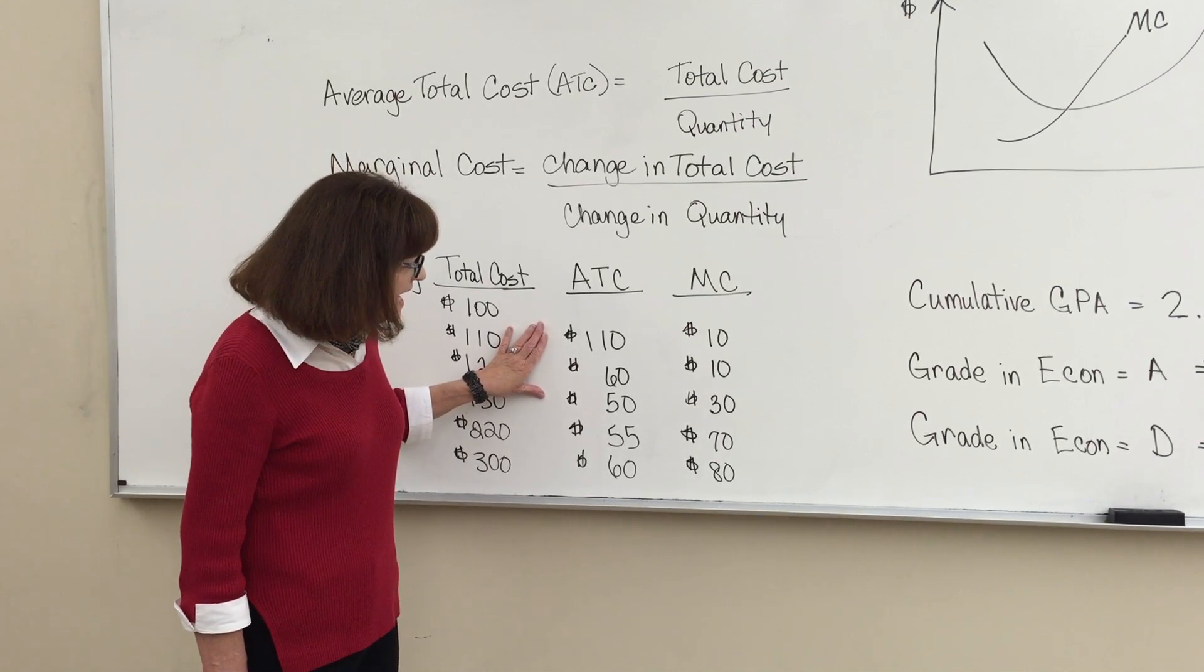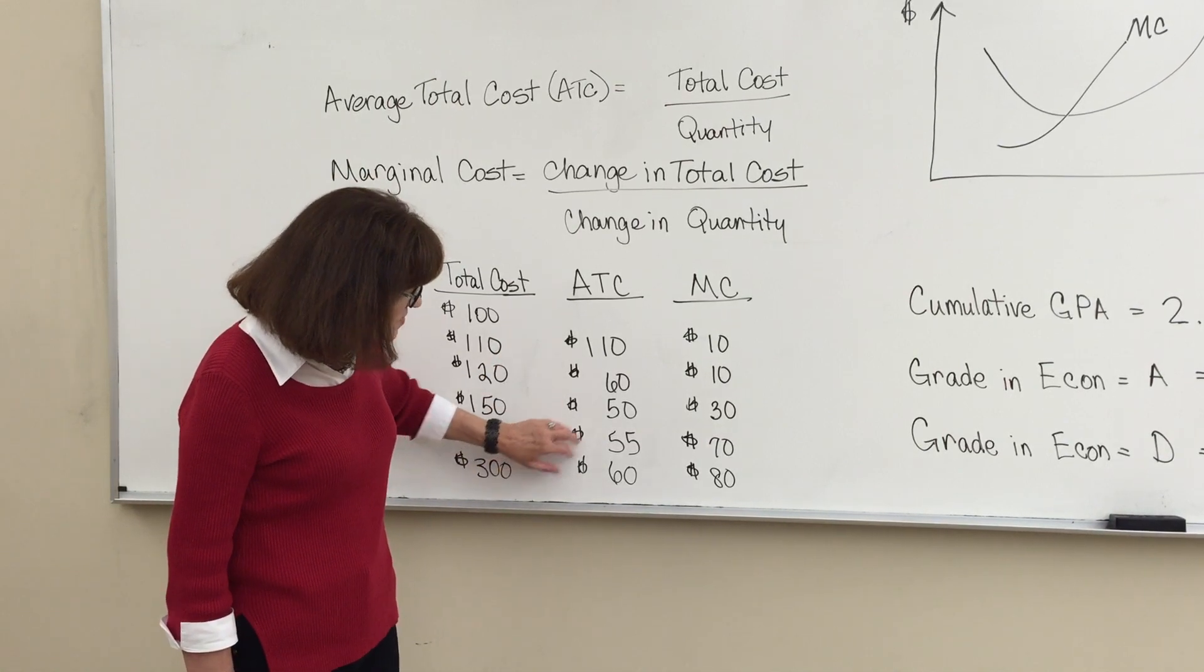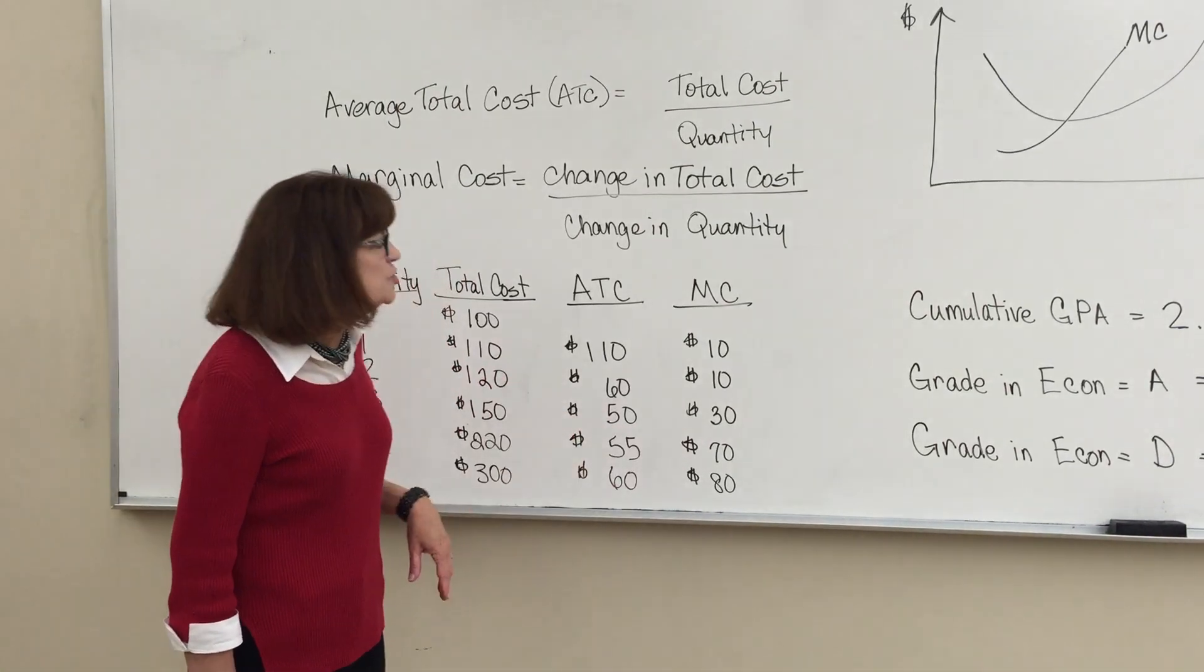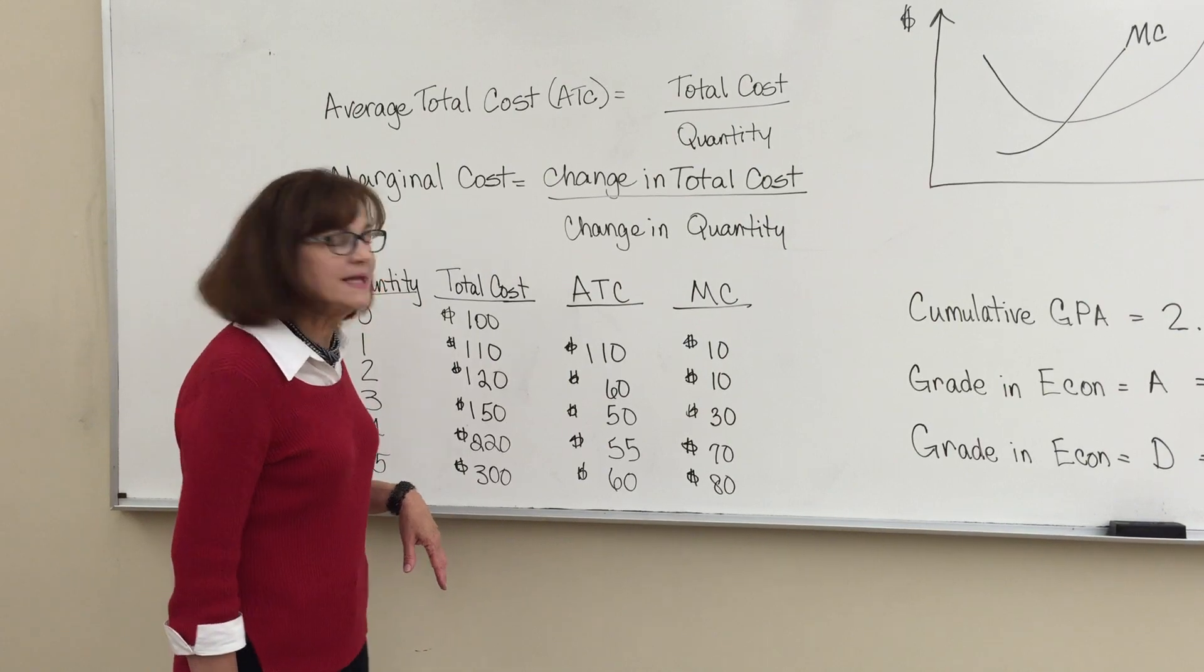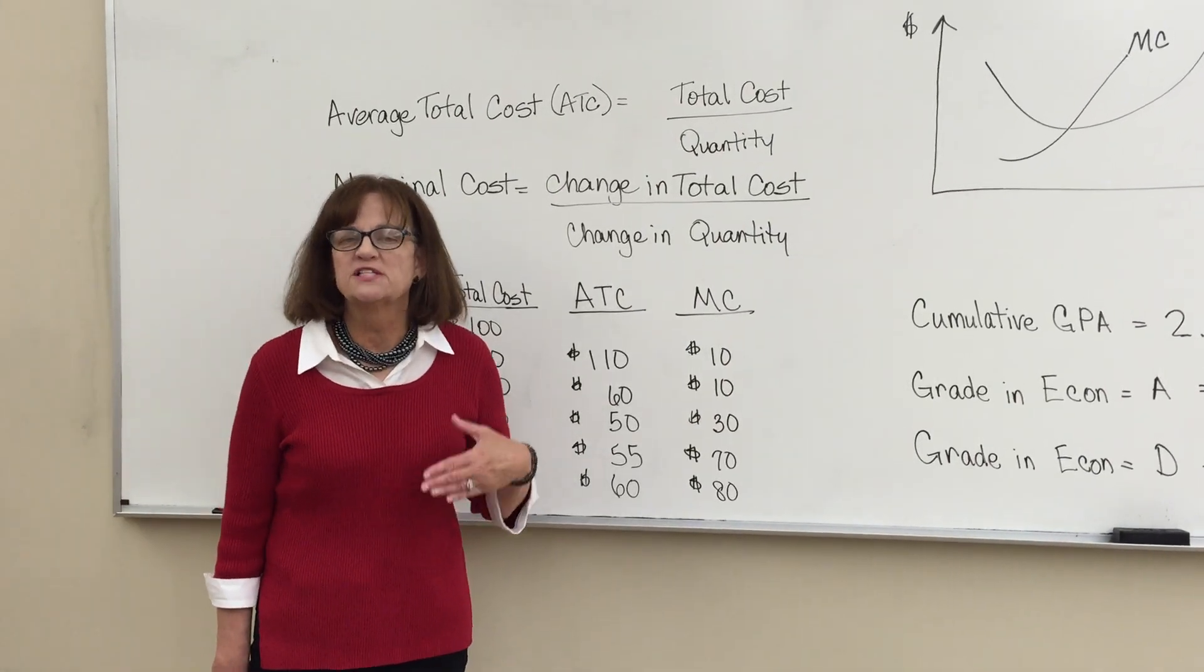When the average total cost is less than the marginal cost, your marginal cost is dragging your average total cost up.